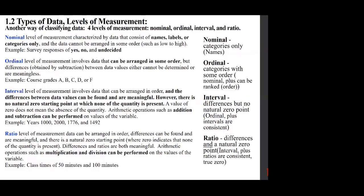In summary: nominal is essentially qualitative. Ordinal gives some sort of ranking. Interval has differences that are meaningful but no natural zero. Ratio has differences, a natural zero, and zero means nonexistence — that's the key idea behind ratio. For ratio to make sense, zero means nonexistence.